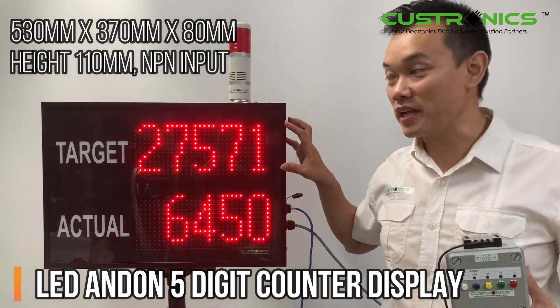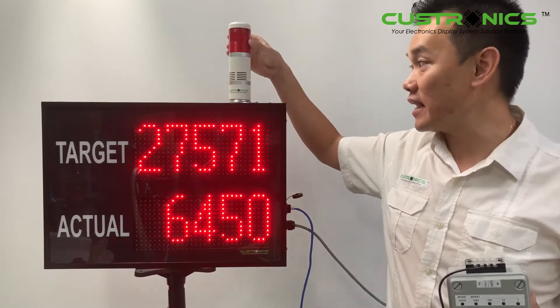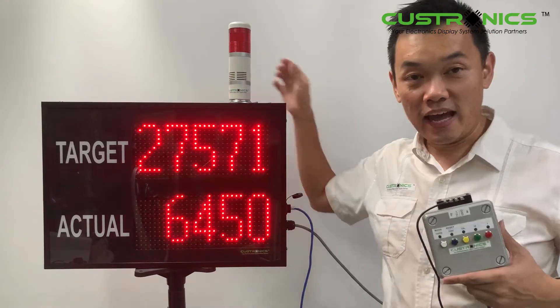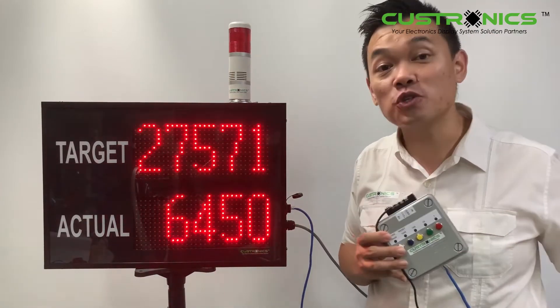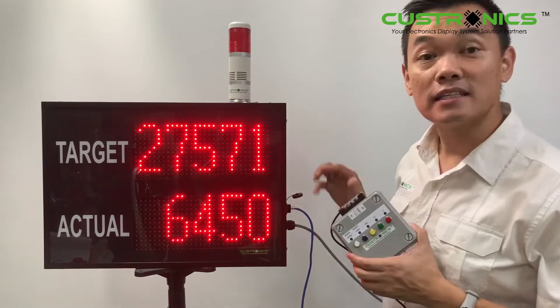Let's start our demonstration today. I can see this is the tower light equipped with the light and also the buzzer and comes with the controller. This controller, basically, you can set the target.